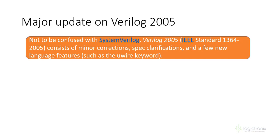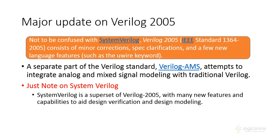Verilog 2005 is standardized as IEEE 1364-2005 and includes some corrections on the 2001 revision. It clarifies some difficulties that arose with 2001 and adds features such as the uwire keyword. Verilog 2005 is not as highly preferred as 2001, but it is utilized as one of the Verilog standards.